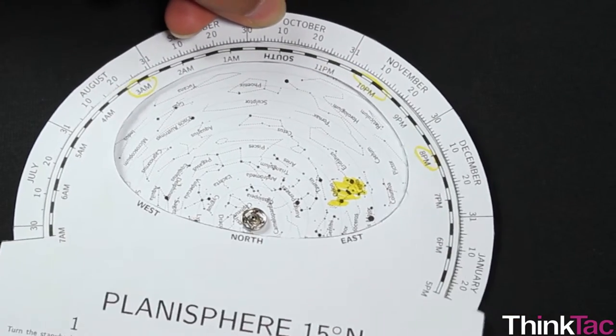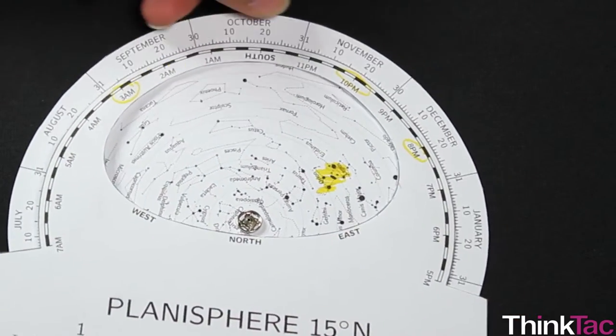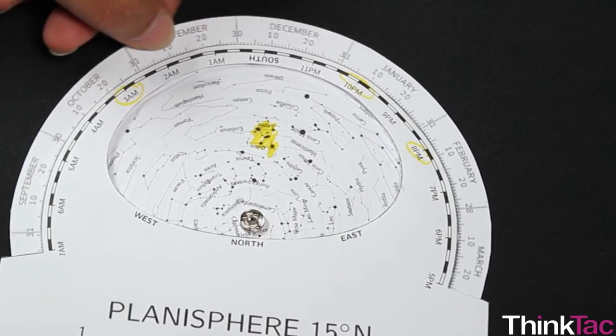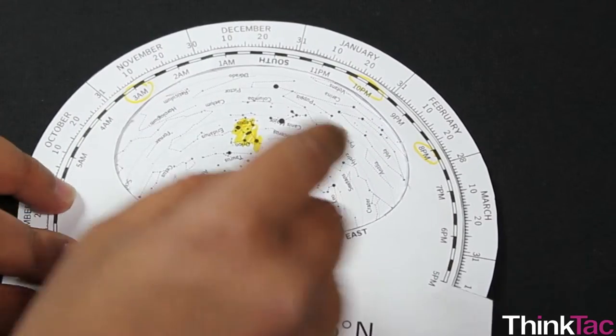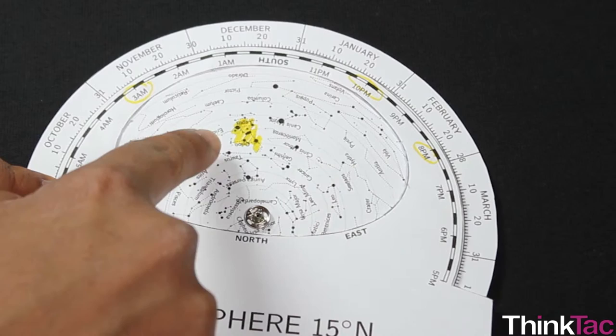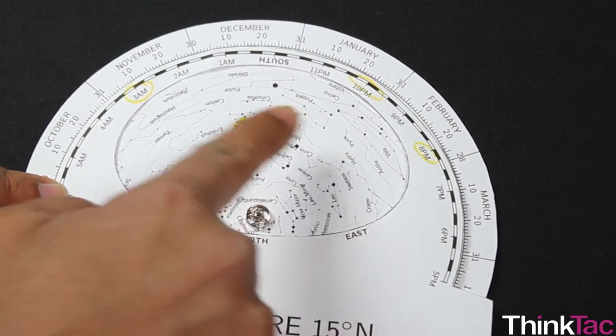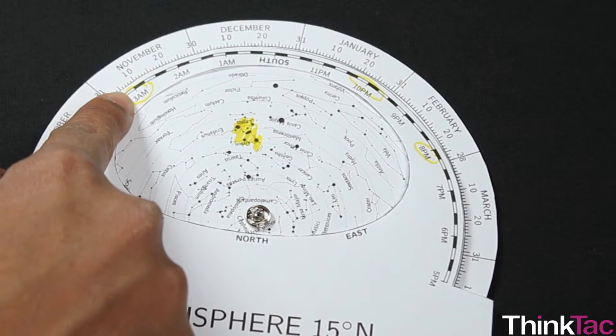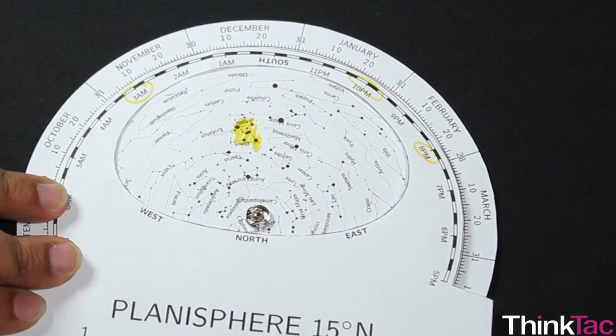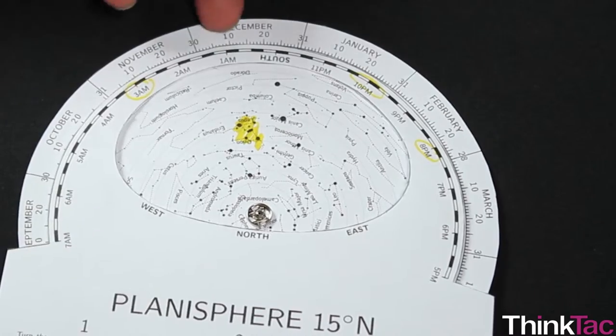In this way you can see how Orion also moves through the year in the sky. So if I'm looking at January 20th at 10 o'clock, I see it very high in the sky. It will be the same at the end of February at 8 o'clock, and in November I get to see it at 3 in the morning at the same position.